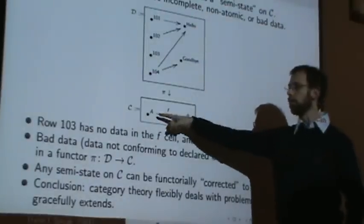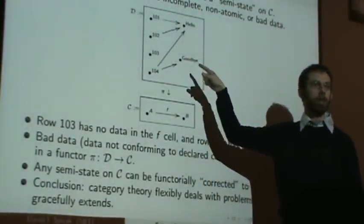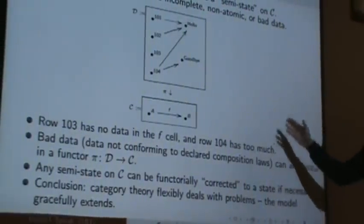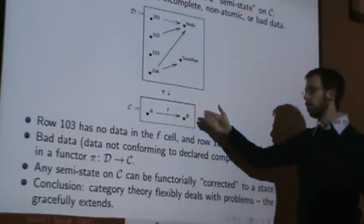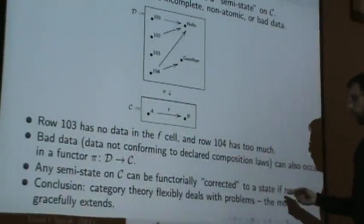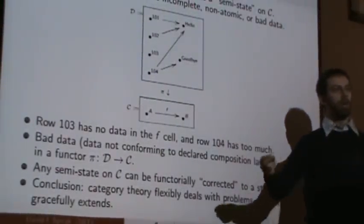Also, any bad data, quote-unquote, like I have a composition law, a business rule, that could be unsatisfied upstairs. That's all fine. So, let's call something like this a semi-state, semi-structured state. It can be functorially corrected to a state if necessary. So, given something like this, I can do what you want, and just destroy...